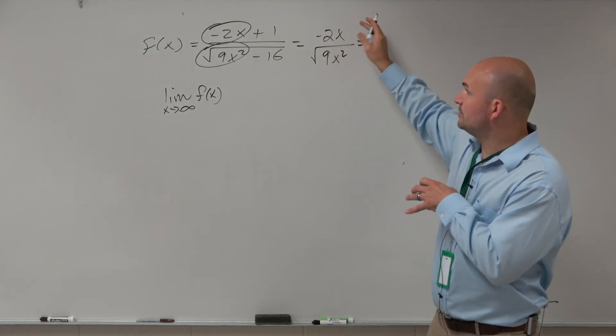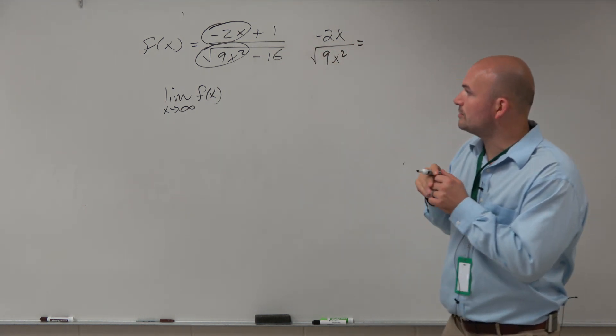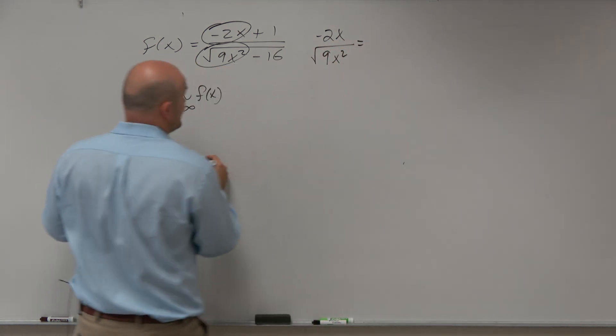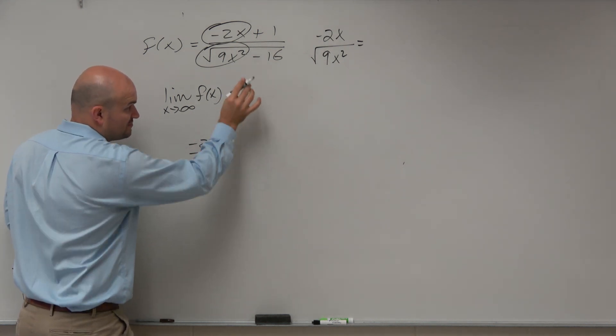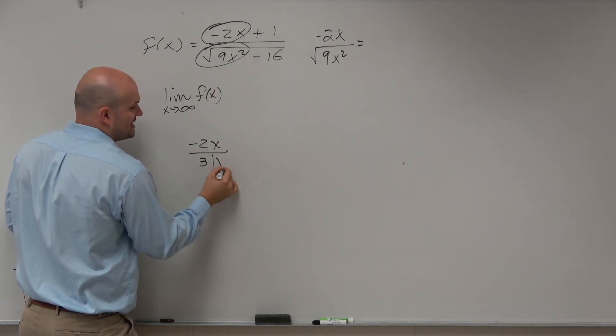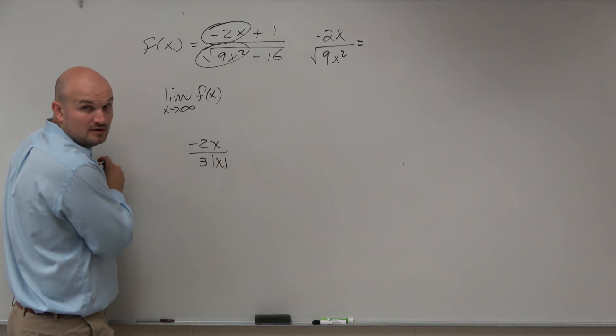Now, when we're not equal to, that's just what we're approaching. So when we go ahead and evaluate, we're going to have negative 2x over the square root of 9 is 3, and then that's the absolute value of x, right?